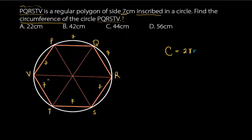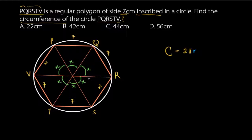When you join all the vertices of the polygon, since it's a regular polygon, each central angle formed is equal. If one angle is x, then all six angles are x. Since the sum of angles at a point in a circle is 360 degrees, all these equal angles must add up to 360 degrees.